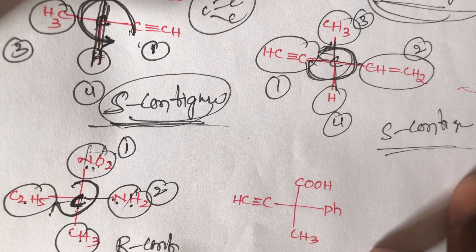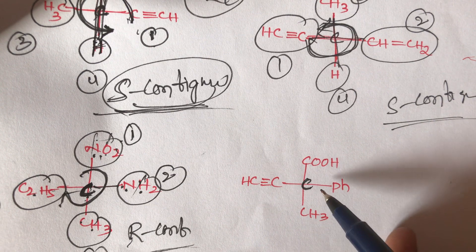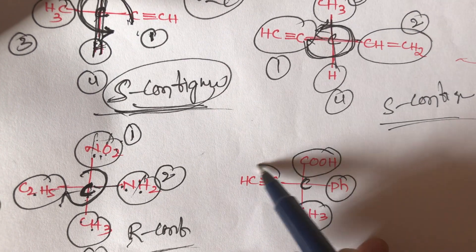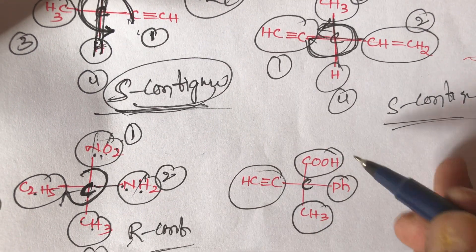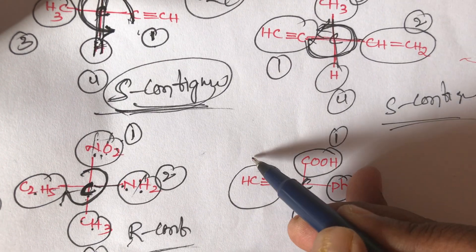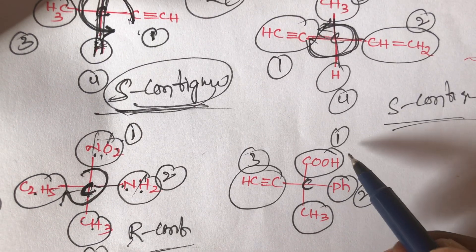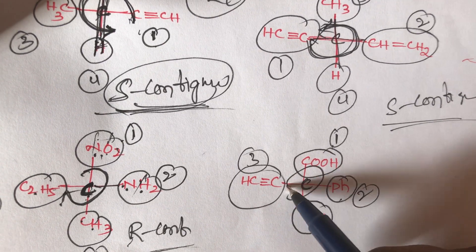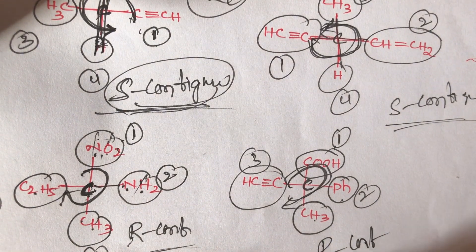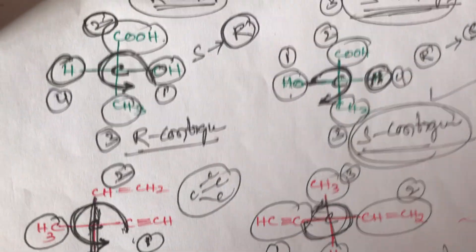Final example: a chiral carbon with a COH group, methyl, phenyl, and a triple bond. First priority goes to the COH group, second to phenyl, third to the triple bond, and fourth to methyl. Going 1 to 2 to 3 is clockwise direction, so this is also R configuration. These are the important simple tricks for RS configuration.